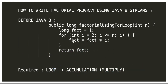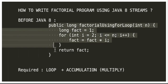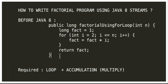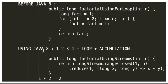The traditional program has a for loop, and then we accumulate the multiplied numbers. Looking at this syntax, it looks like we need a for loop, then multiply the sequence of numbers, and then accumulate the result. So this is what we want to achieve using Java 8 syntax. For the loop, I can use LongStream.rangeClosed.